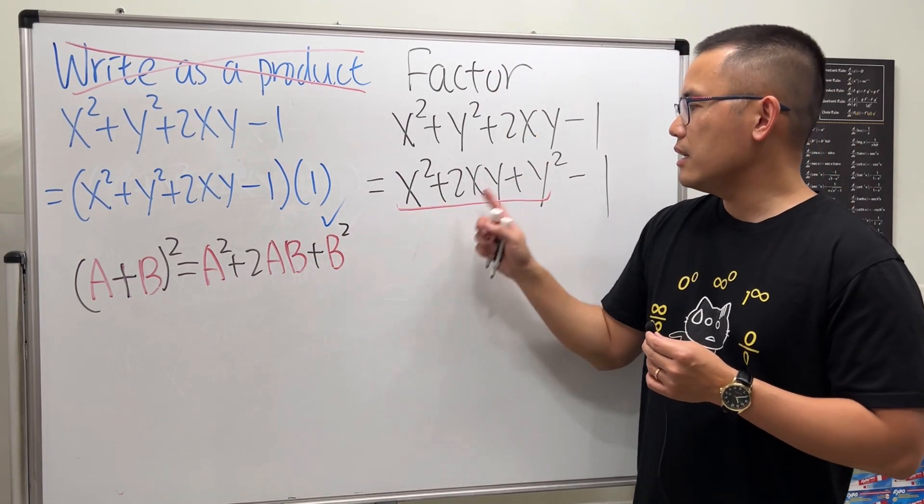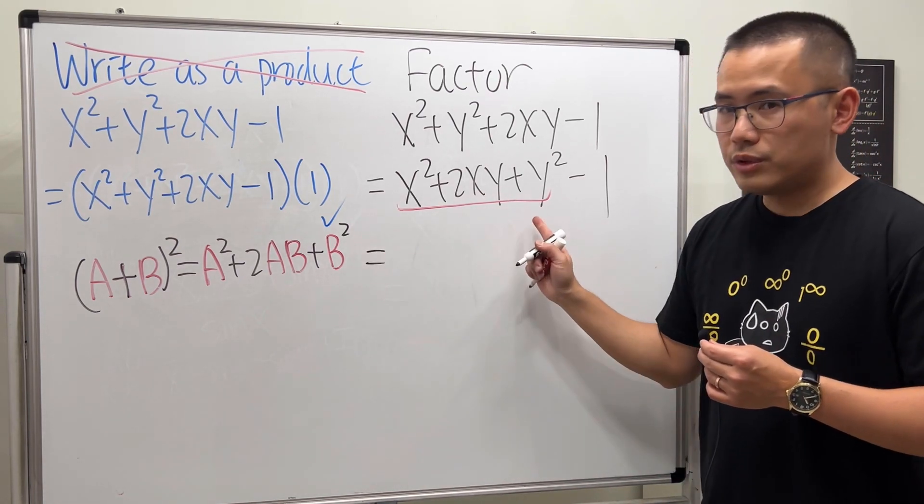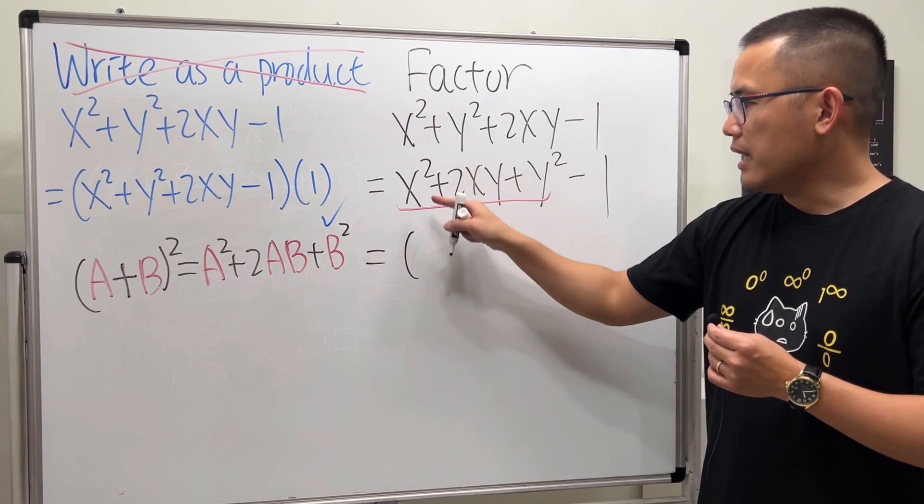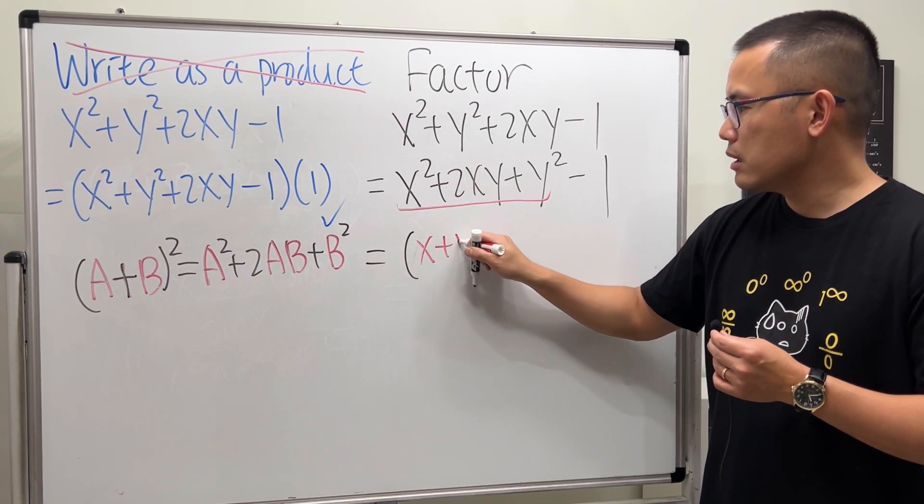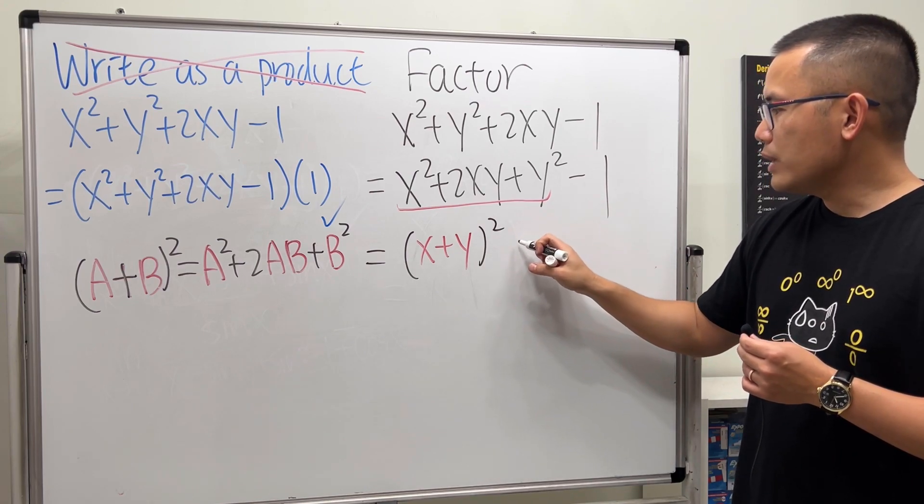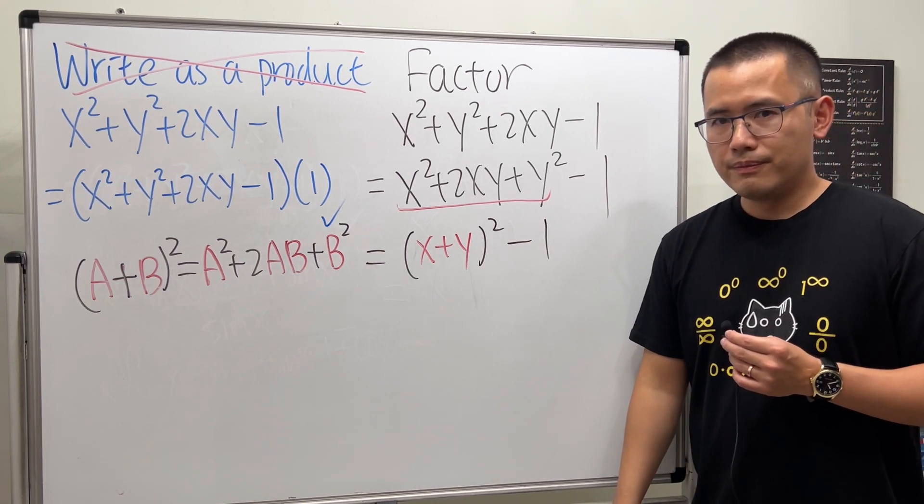So when you fill this out, when you expand it, you get this. And of course the x is the a, the y is the b, so all these three terms will factor and we get that. So we just get (x+y)² and then we have the minus one.